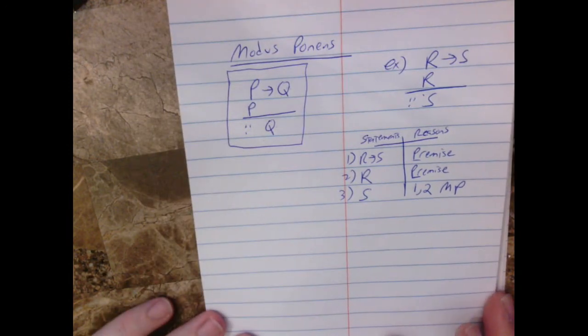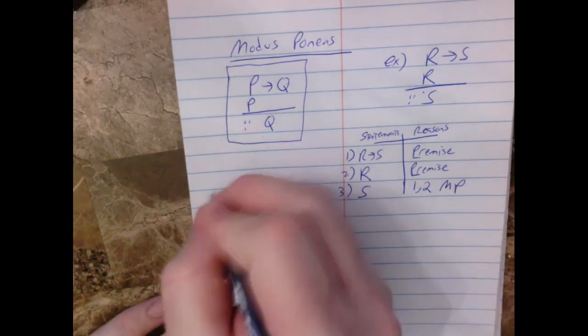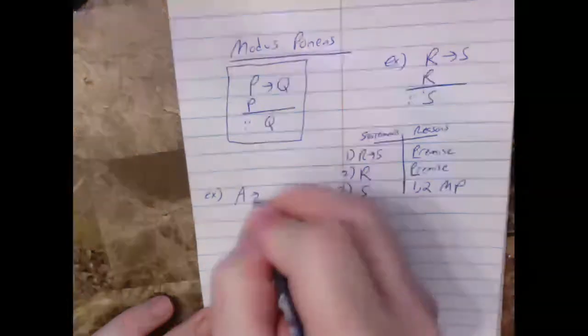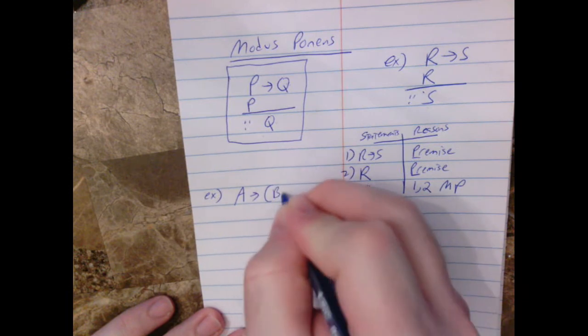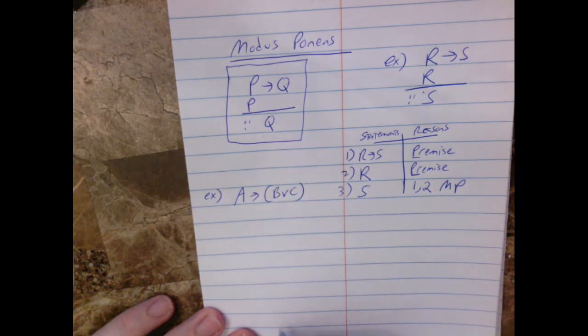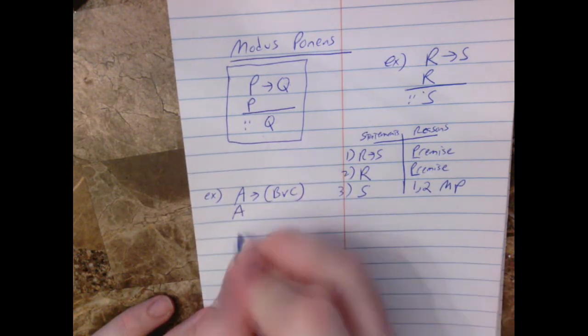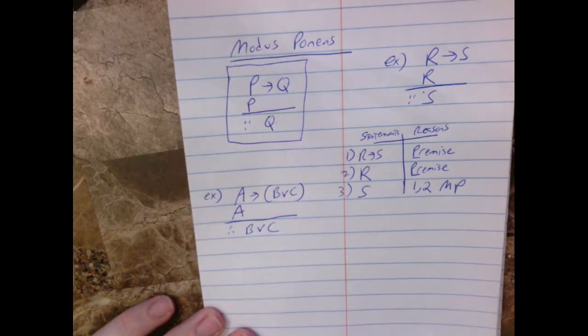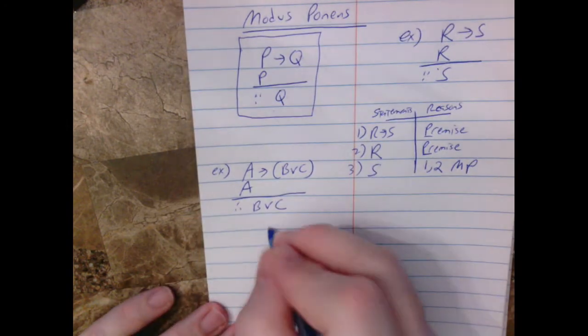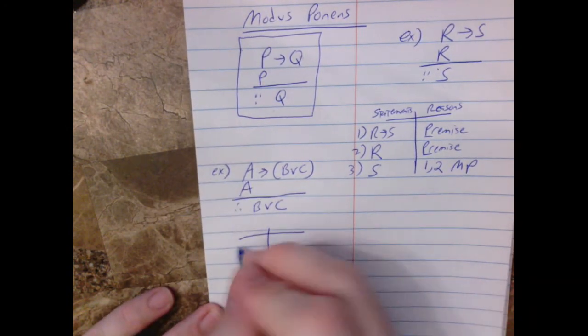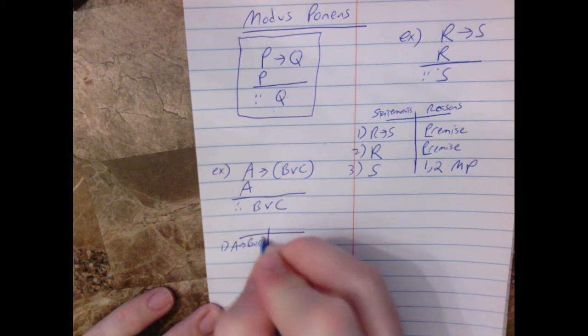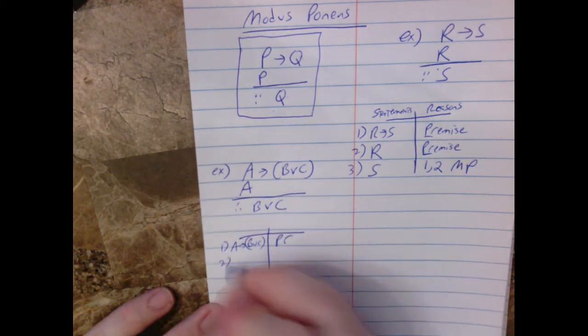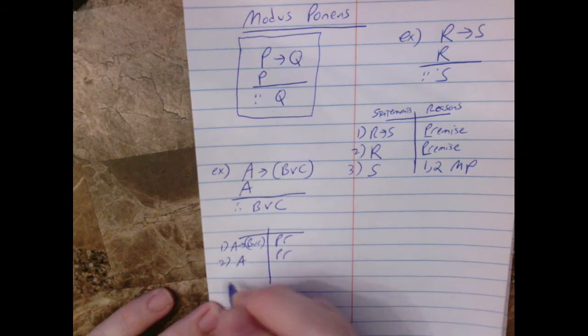All right. I'm going to have you try one now. Or we'll do it together. So here's another example. So suppose we have A implies B or C. And I'm giving you A. And we're going to try to conclude B or C. So let's set up the proof. So one is going to be A implies B or C. That's the premise. Two is going to be A. That's another premise. And then three.